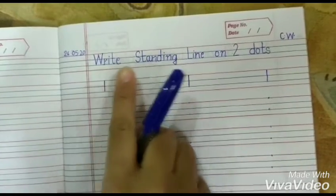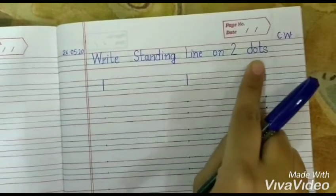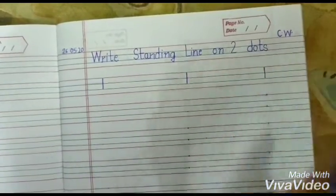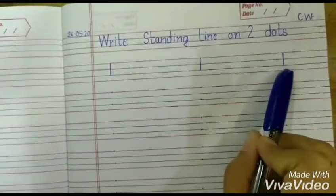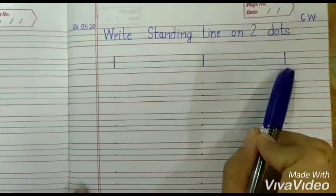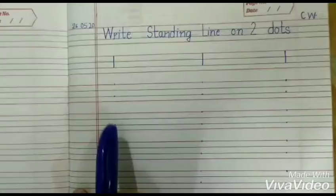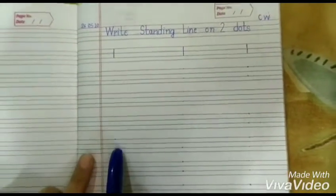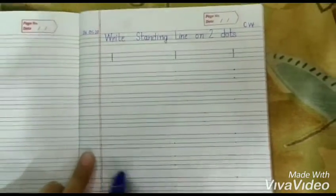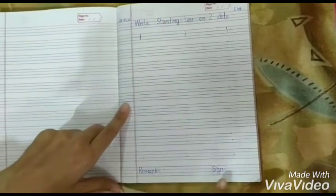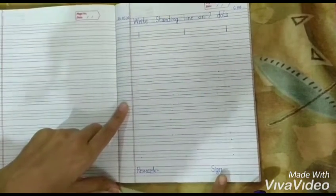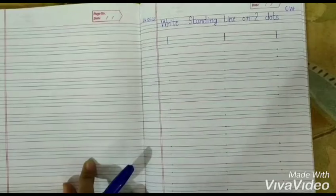On the first line, write standing line on two dots. Please make standing line and make three rows of it. Please give two dots for making standing line on the whole page. Leave the last line where you have to mention remark on one side and sign on the other. Please do this mentioning work with blue pen.